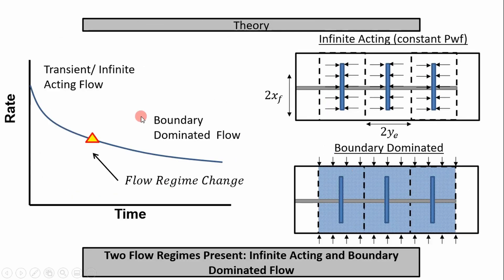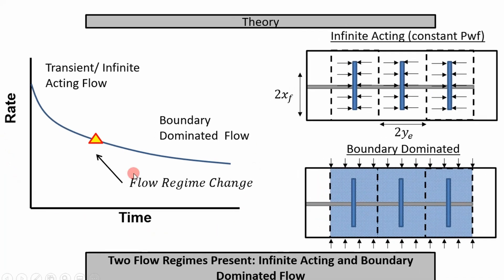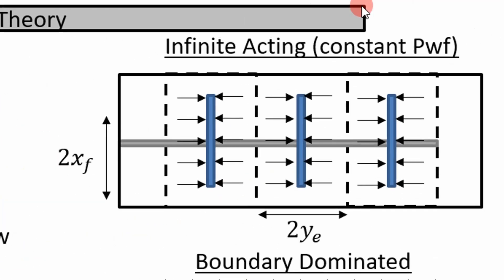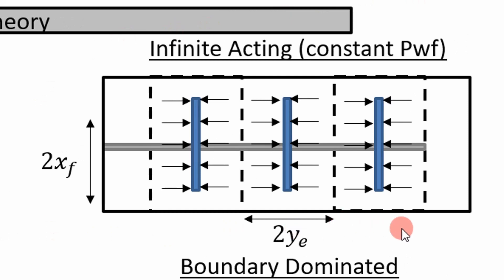So the theory behind these equations is that it's similar to what we looked at with the radial flow reciprocal rate radial flow plot in that if you plot it, you have two flow regimes. You're assuming an infinite acting flow regime, in this case infinite acting linear flow, followed by boundary dominated flow. So if we take a closer look at kind of the visual of what we're talking about,